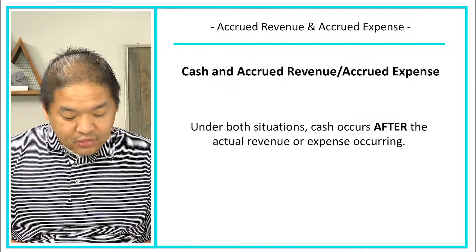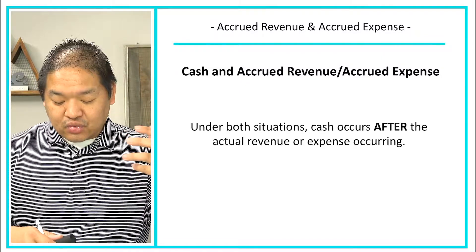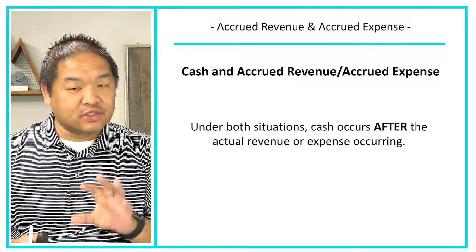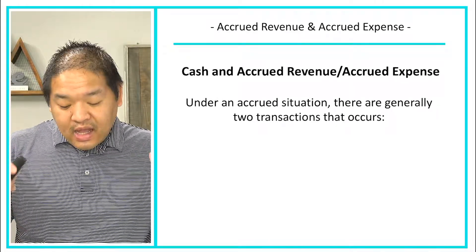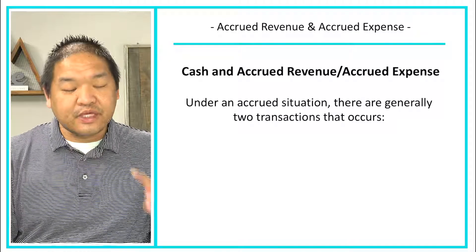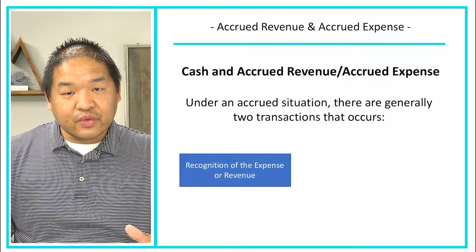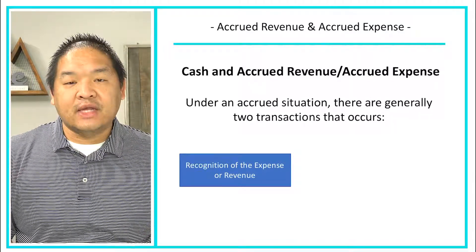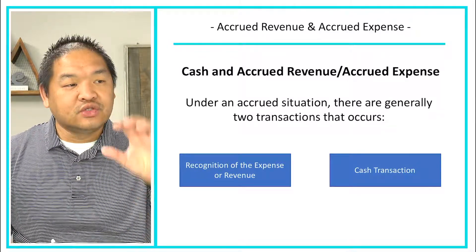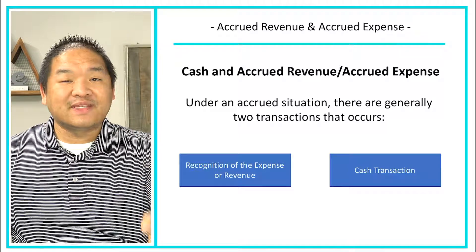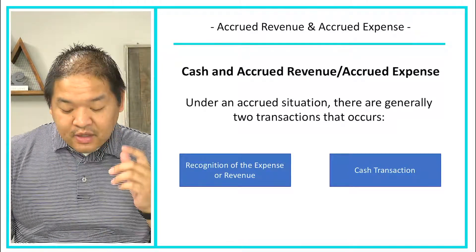Under both situations, the cash happens after the actual revenue or expense is incurred — this is the opposite of what we learned in the last lesson. Under an accrued situation, there are generally two transactions: the first is the recognition of the revenue or the expense, and the second transaction that happens afterwards is the cash transaction.